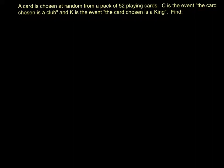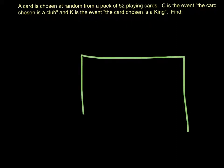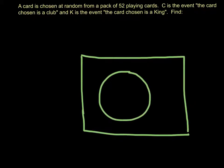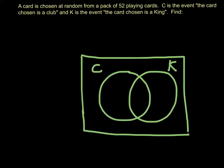For an example then, we'll do an example from a book where we've got an experiment. A card is chosen at random from a pack of 52 playing cards. C is the event the card chosen is a club, and K is the event the card chosen is a king. First of all, we put that information into a Venn diagram, represented that way, and then we're going to use the Venn diagram to work out a list of probabilities. So we've got our box, which is the entire set, and two circles representing the events C and K.